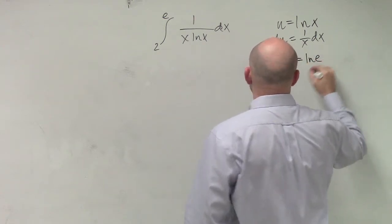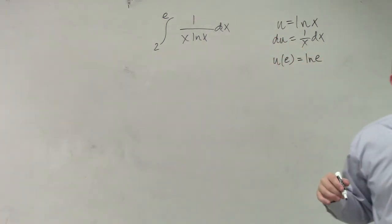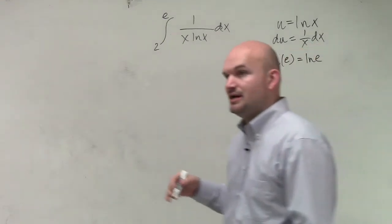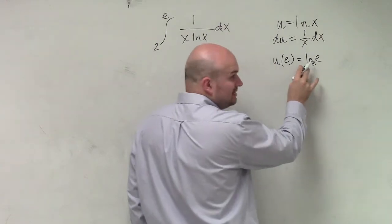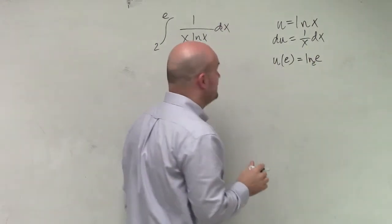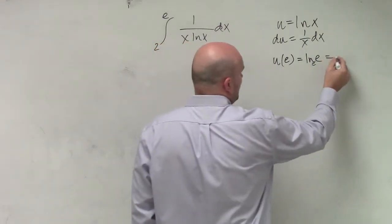So what I'll do is I'm just going to plug in u of e, which is ln of e, which you guys should notice. If you guys remember the rules of exponent or rules of logarithms, e raised to what value gives you e? 1.